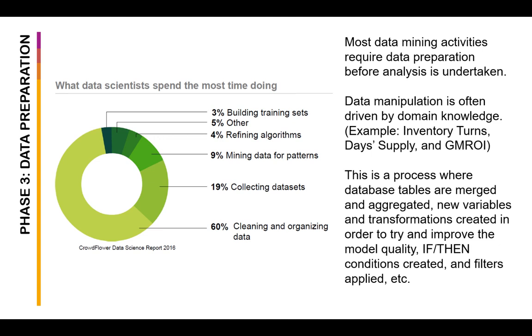For example, an operations analyst would know what necessary attributes or features are needed to compute for inventory turns, days supply, and GMROI. In the same way, epidemiologists would know how to model what features are needed to model the spread of disease at a certain time. In this phase, this is where we merge and aggregate database tables, we create new variables or transform existing variables in order to try and improve the model quality.